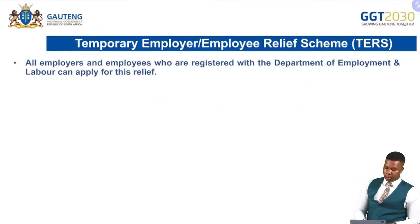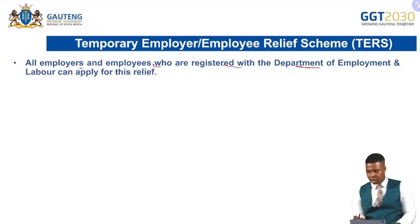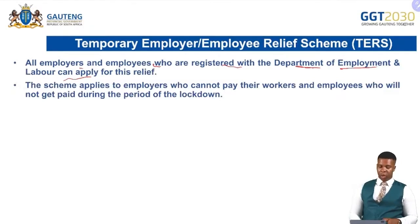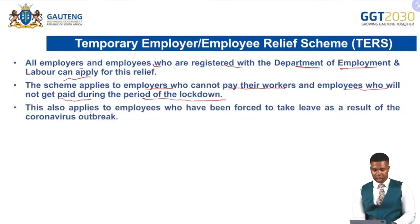The Temporary Employer/Employee Relief Scheme (TERS) was developed due to COVID-19. All employers or employees registered with the Department of Employment and Labour can apply. It applies to employers who cannot pay their workers and employees who are not getting paid during lockdown, as well as employees who were forced to take leave due to coronavirus outbreaks.